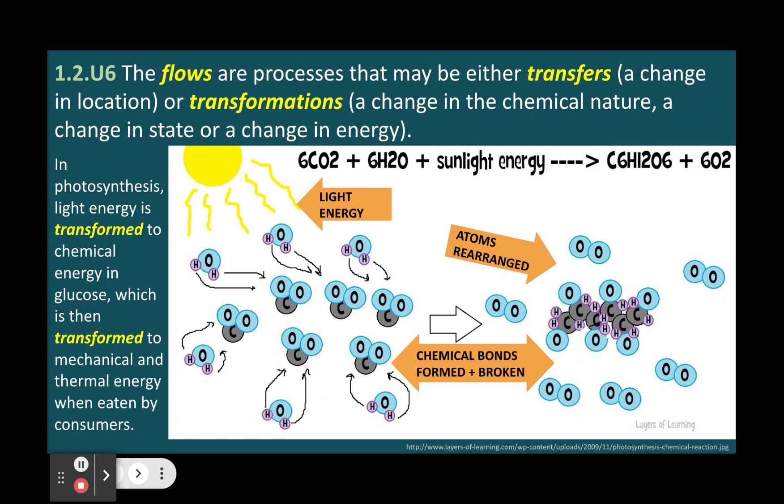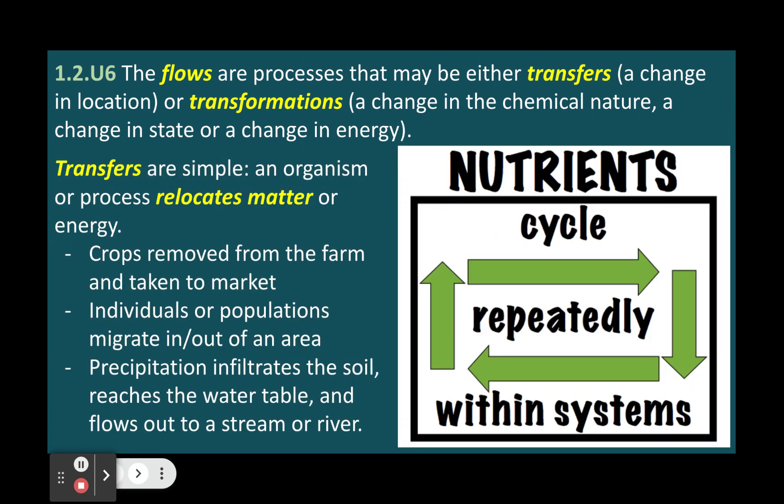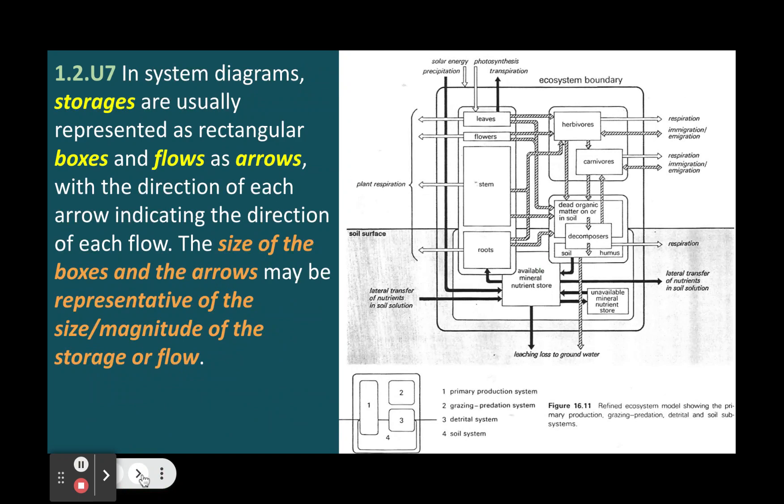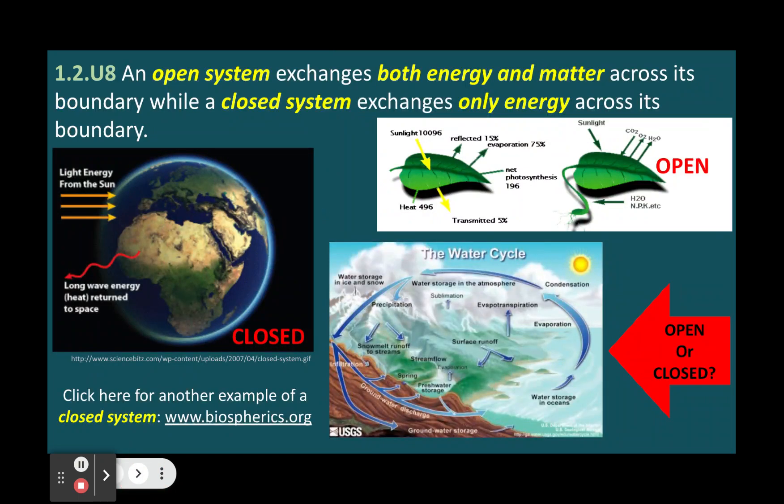The system can also be classified as open, closed, or isolated. An open system exchanges both energy and matter across its boundary with its environment. For example, an ecosystem is an open system because it receives inputs of solar energy and nutrients from outside and releases outputs of heat and waste materials to the outside.